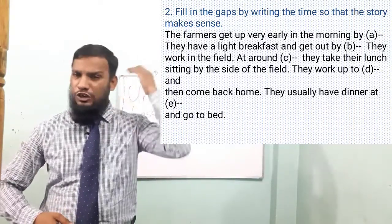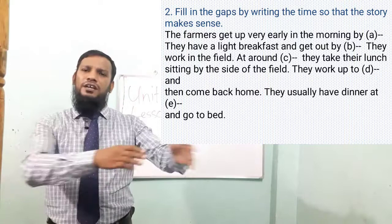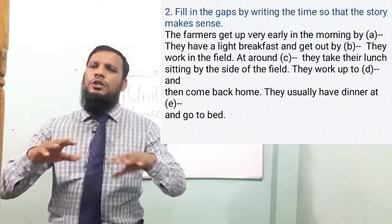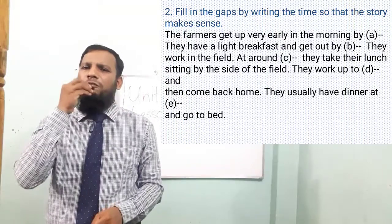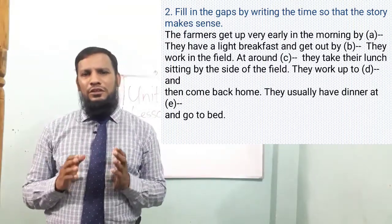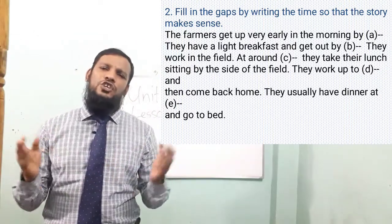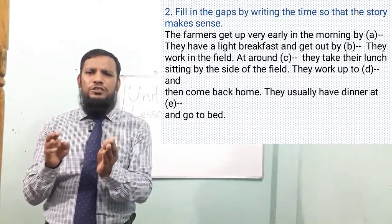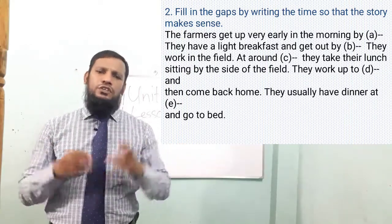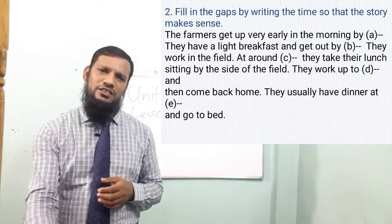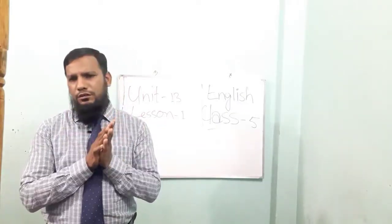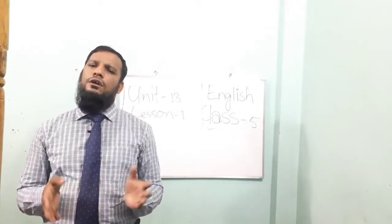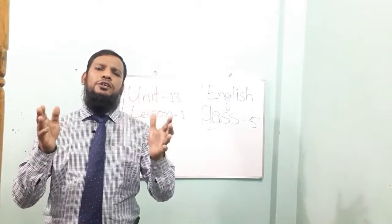Let's read the text once again and try to use the right time. The farmer gets up early in the morning by [blank]. They have a light breakfast and get out by [blank]. They work in the field. At around [blank] they take their lunch sitting by the side of the field. They work up to [blank], then come back home. They usually have dinner at [blank] and go to bed. I am giving you the model answer.